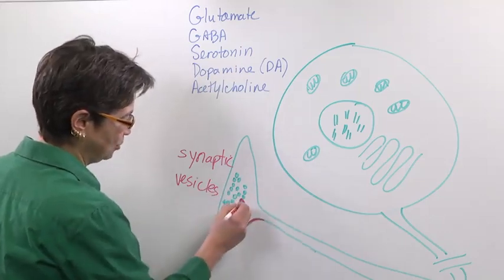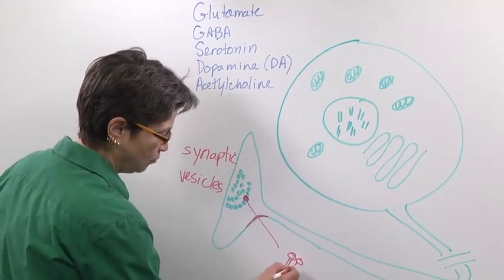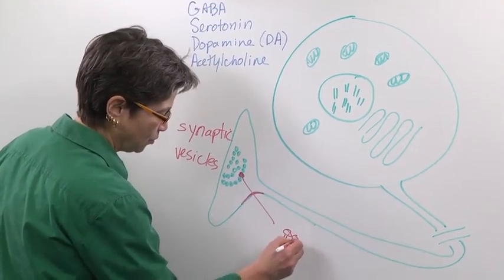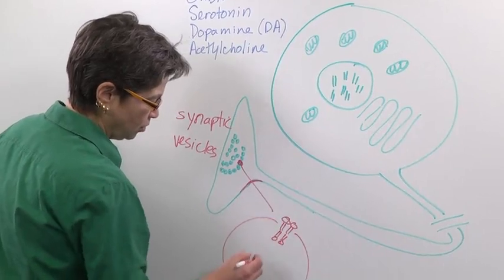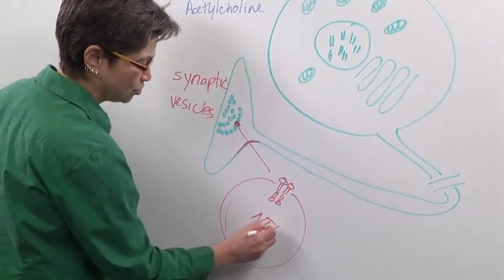If we look at one of these, it has a membrane. We remember that the membrane looks something like this, but we're not going to draw all that. So here's the membrane, and inside here is a neurotransmitter.